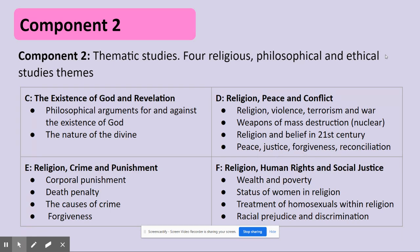Component two is all about those themes rather than a study of religions. The first theme is the existence of God and revelation, where we will look at philosophical arguments both for and against the existence of God, seeing how they weigh up next to each other and which is stronger and why. We will also explore the nature of the divine — the characteristics of God, or if some religions believe so, gods themselves. Theme D is religion, peace and conflict. This covers religion in relation to violence, terrorism and war, including religious attitudes towards weapons of mass destruction like nuclear weapons, and how religion and belief navigates ideas like peace, justice, forgiveness and reconciliation.